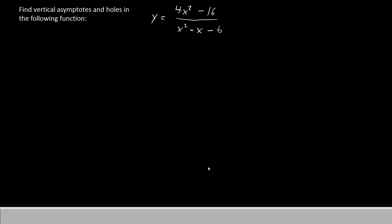Our rational function this time is y equals 4x squared minus 16 divided by x squared minus x minus 6. We're going to try to find the vertical asymptotes and the holes for that function. The first thing you should do if you have a rational function is factor everything as much as possible immediately. It's going to make your life a whole lot easier.